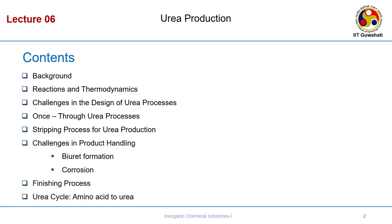What we are going to cover is a brief background on the urea synthesis, then the reactions and thermodynamics involved, and the challenges in the design of the urea process. The urea process is not that easy — the basic reaction uses ammonia and carbon dioxide, and when they are mixed and reacted they form urea. But that is not easy because there are a number of reactions involved, which we will discuss one by one.